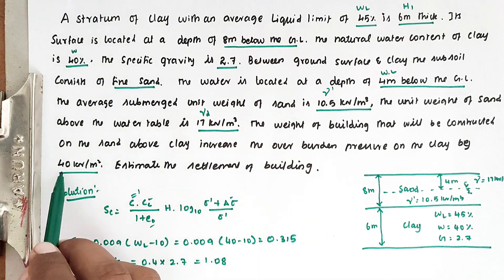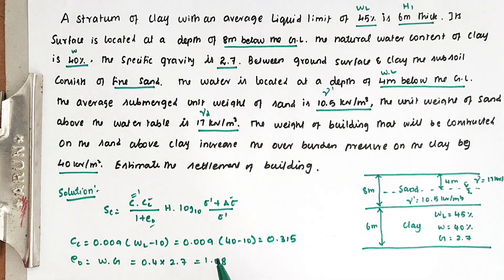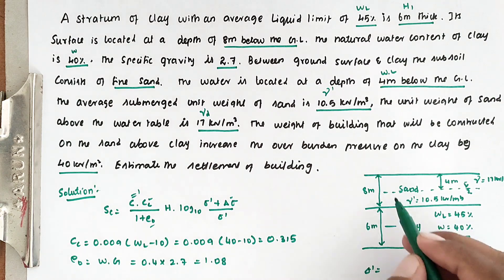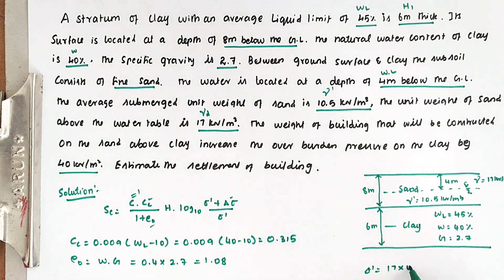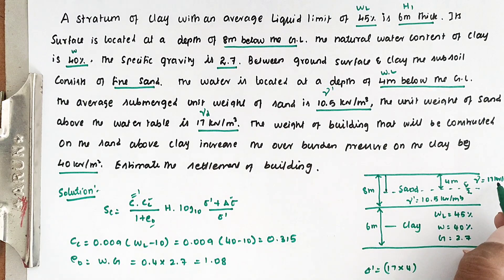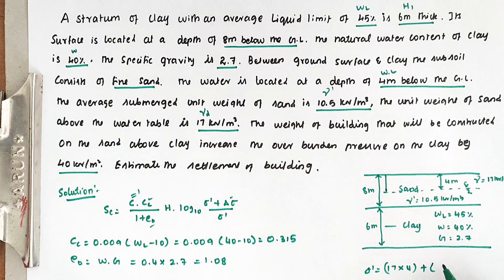Δσ is given as 40 kN/m². Next we have to find out σ'. Sigma-dash is calculated at the top of the clay layer. So now: σ' = 17 × 4 — the thickness is 4 meters and the unit weight is 17 — plus 10.5 × 4.